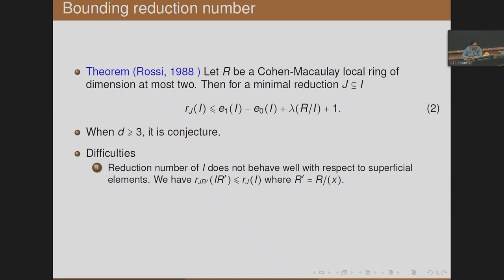Our motivation was to understand the difficulties in extending Rossi's proof to dimension larger than 2. We found two major difficulties. First, the reduction number does not behave well with respect to superficial elements: writing R' = R/xR for a superficial element x, the relationship between r(IR') and r(I) is an inequality that is not useful — we would need a precise relation. In general, there is no clear relation between these two invariants.